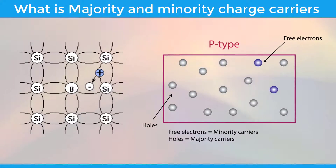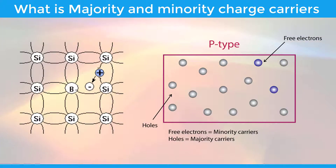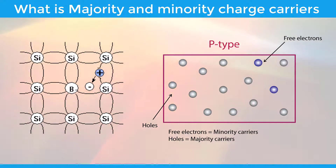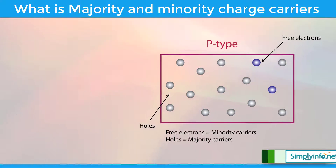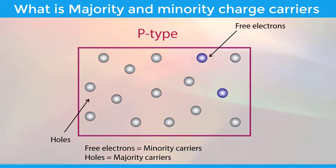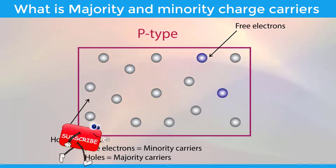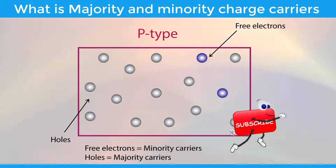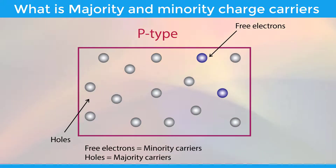Now, let's look at majority and minority charge carriers in P-type semiconductor. When trivalent atoms such as boron or gallium are added to the intrinsic semiconductor, a P-type semiconductor is formed. In a P-type semiconductor, a large number of holes is present. Hence, holes are the majority charge carriers, and they carry most of the electric charge or electric current in the P-type semiconductor.